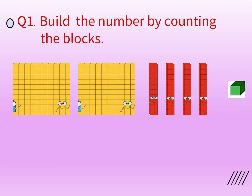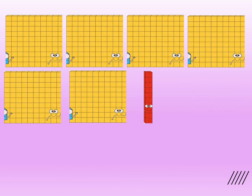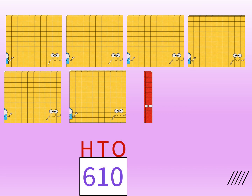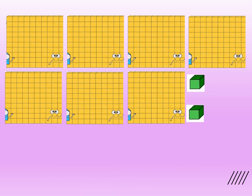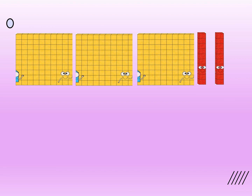Can you build the number by counting the blocks here? Here we have 2 hundreds, 4 tens and 1 one, and the number is 241. Can you count the number here? 3 hundreds, 2 tens and 3 ones, and the number is 323. Here we have 6 hundreds and 1 ten, and the number is 610. So here we have 7 hundreds and 2 ones. So 7 hundreds and 2 ones make the number 702. Now what do we have here? 3 hundreds and 2 tens. So 3 hundreds and 2 tens make the number 320.